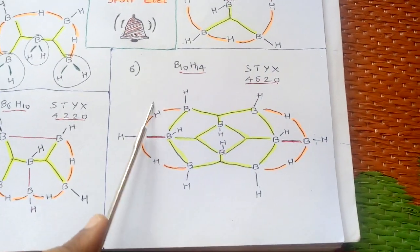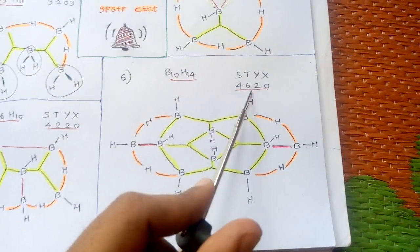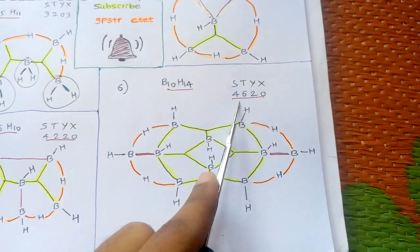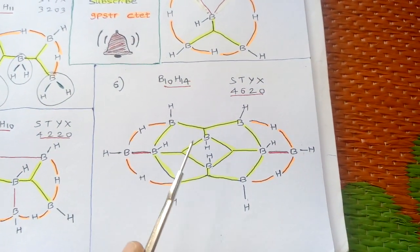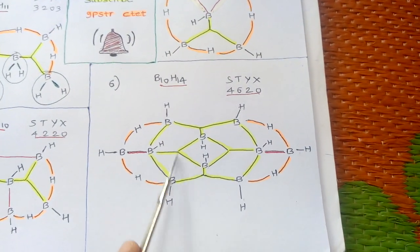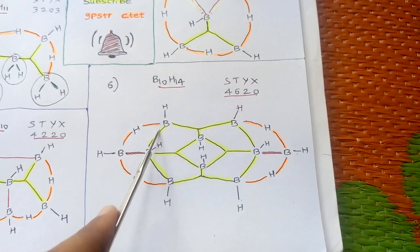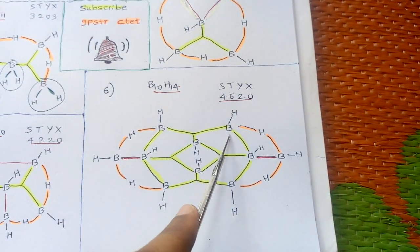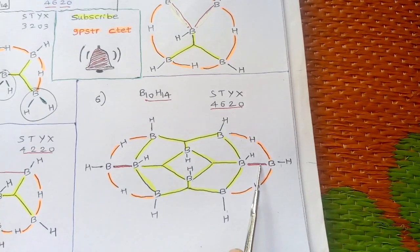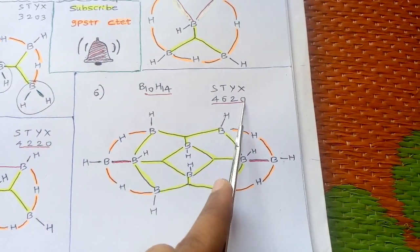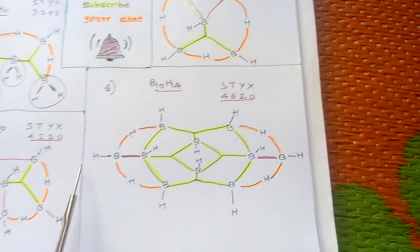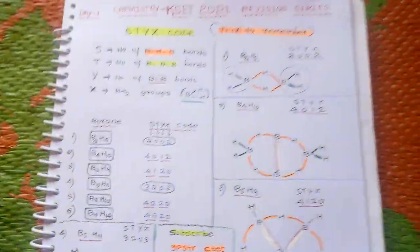For B10H14, the STYX code is 4620. There are four BHB bonds. BBB bonds are six — shown in highlighted color: one, two, three, four, five, and six BBB bonds. Y, the BB bonds, is two. X is zero — no BH2 groups are present, only BH bonds.